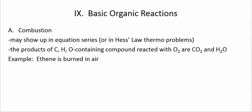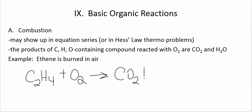For example, ethene burned in air. Ethene is C2H4. It has a double bond. If I burn it in air, I react with oxygen. The products of this combustion reaction are CO2 and water.